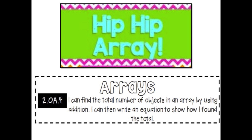Start with your title: Arrays. Your I can statement is: I can find the total number of objects in an array by using addition. I can then write an equation to show how I found the total. We'll pause here so you can finish writing your I can statement.